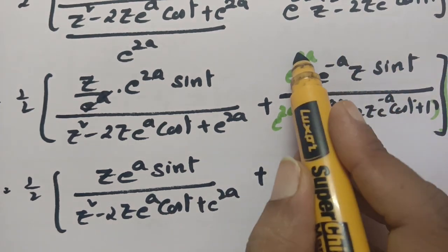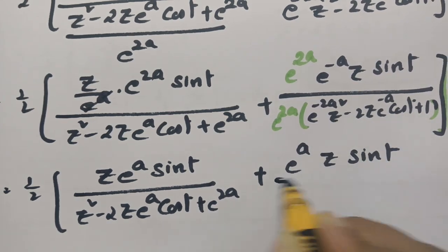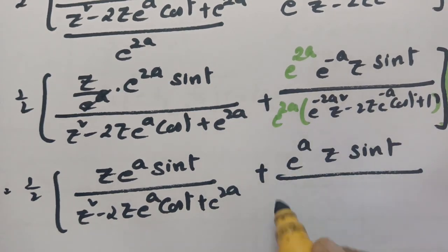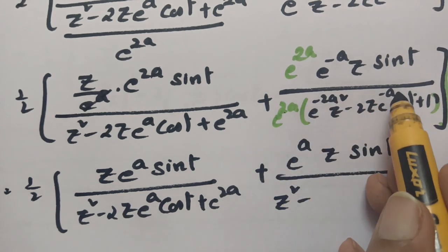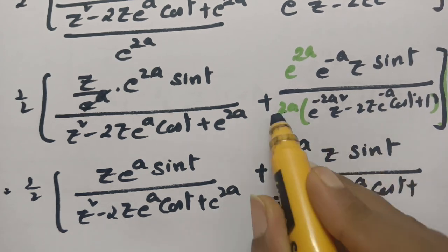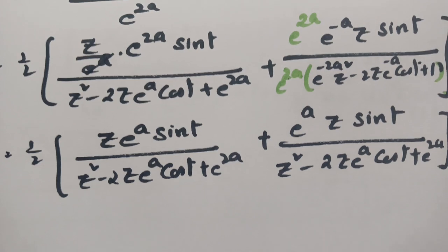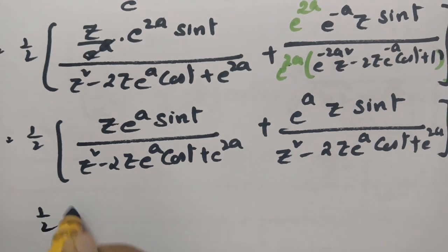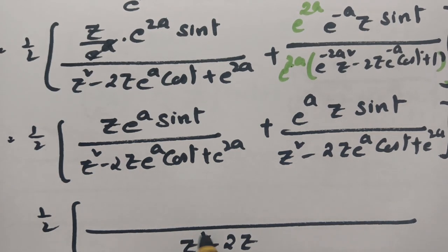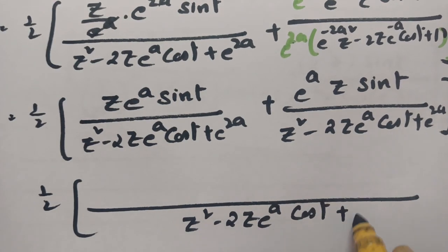And here if I multiply these two — 2a minus a — so this will be e power a times z, into sin(t), divided by e power minus 2a into z square minus 2z e power minus a into cos(t) plus 1. After multiplying and cancelling, this will be z square, and 2a minus a gives 2z into e power a into cos(t) plus e power 2a. So if you observe properly, the half times: since we have the same denominator, the LCM will also be the same: z square minus 2z into e power a into cos(t) plus e power 2a.